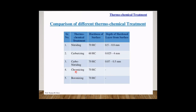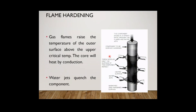These are the comparisons of different case hardening processes. For nitriding we can achieve 70 HRC Rockwell hardness and create case hardening with a thickness of 0.5 to 0.8 mm. For carburizing we can get 60 HRC and produce a layer thickness of 0.025 to 4 mm. For carbonitriding we can achieve 70 HRC and produce a thickness of 0.07 to 0.5 mm.